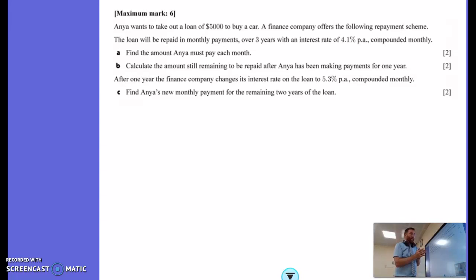Interest rate 4.1% compounded monthly. Now, some people will think, oh, I'll go to the compound interest formula for this one. But as soon as we're talking about how much is the payment, the monthly payments, as soon as we're getting into the nitty-gritty of that, we're going to need to use the GDC.